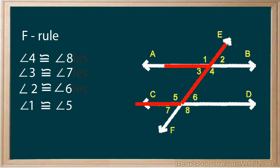And angles 1 and 5 form an upside-down backward F. Tracing the F on parallel lines helps identify the congruent corresponding angles.